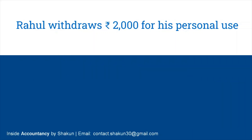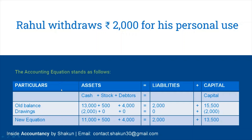Transaction 6: Rahul withdraws 2,000 for personal use — this is drawings. Since the amount is withdrawn from cash, cash is reduced by 2,000. Since drawings are a loss for the business, 2,000 is also subtracted from capital. The new equation gives 15,500 on both sides, proving assets equal liabilities plus capital. These were step-by-step examples of the effect of various transactions on the accounting equation.